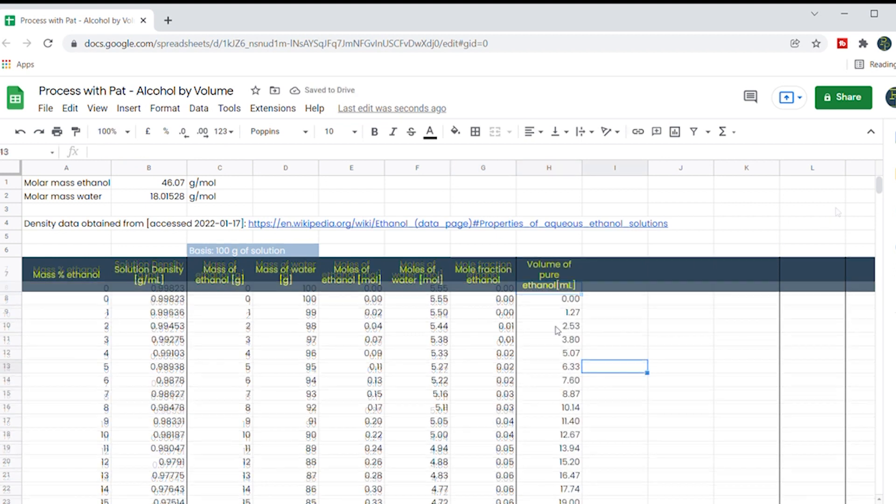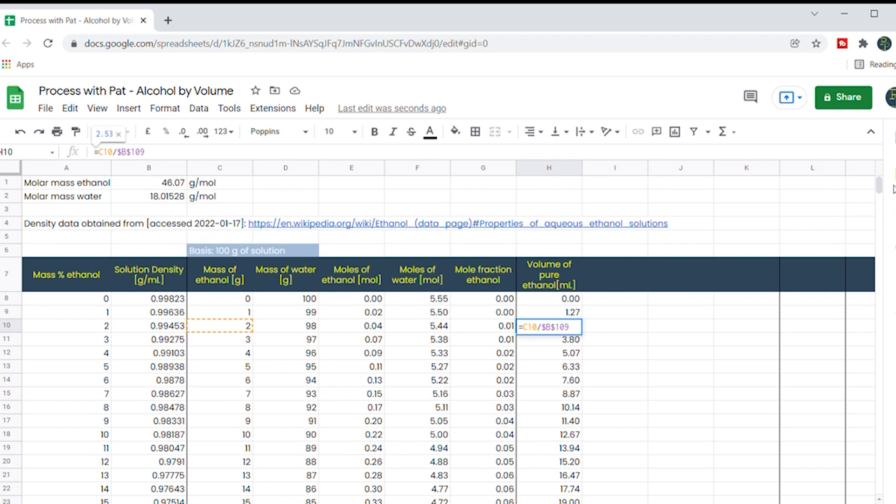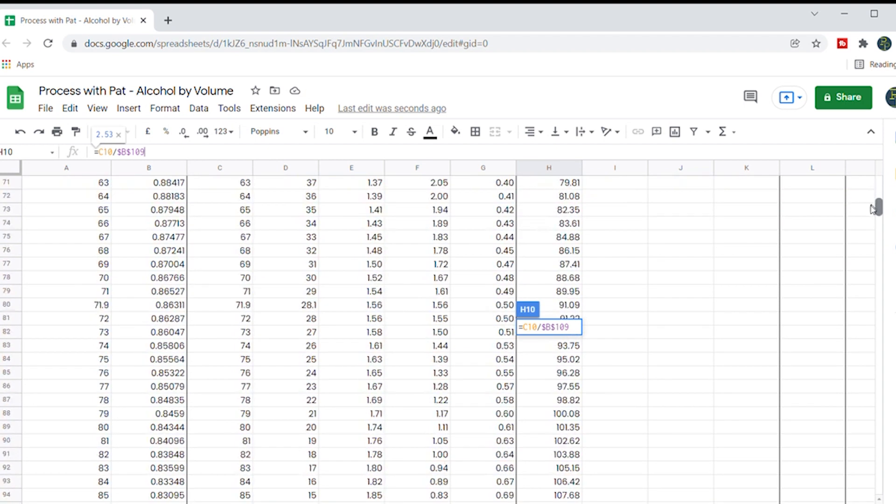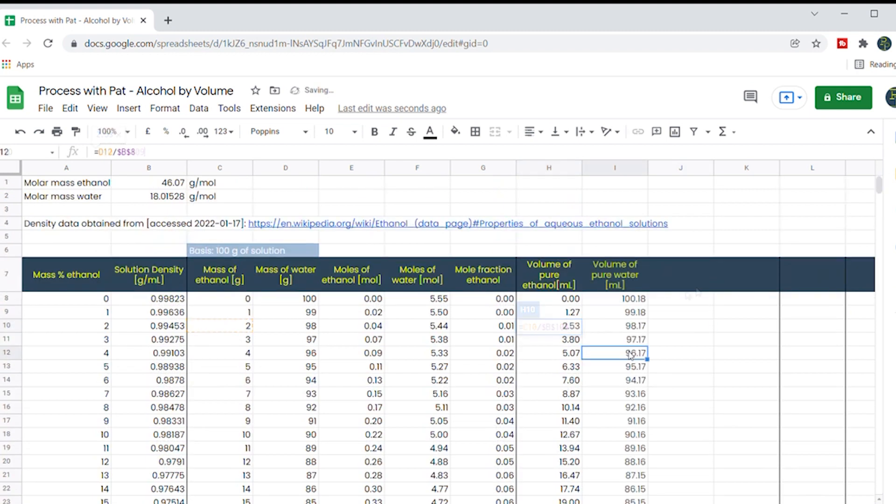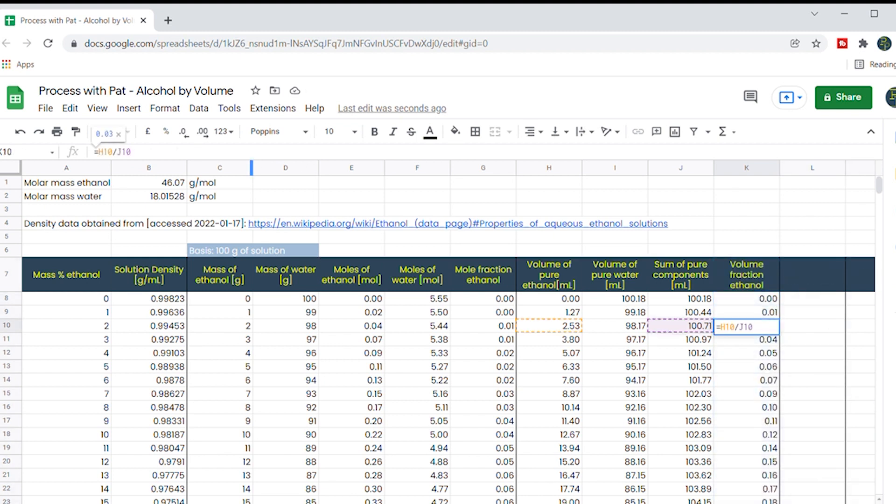Now we're going to work out the pure component volumes and pretend we have not mixed them yet. So I divide the mass of ethanol by the density of 100% ethanol all the way down here. And I divide the mass of water by the density of 0% ethanol aka pure water up here. I can then get the sum of the pure component volumes, again this is before mixing, and work out a volume fraction ethanol by dividing the volume of pure ethanol by the sum of the pure component volumes.